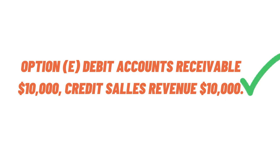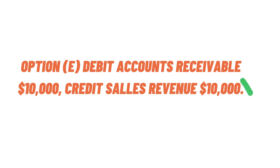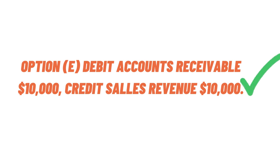We have left only one option, which is option E. That's the correct answer: debit accounts receivable with $10,000 and credit sales revenue with $10,000. That's the correct answer to the question.